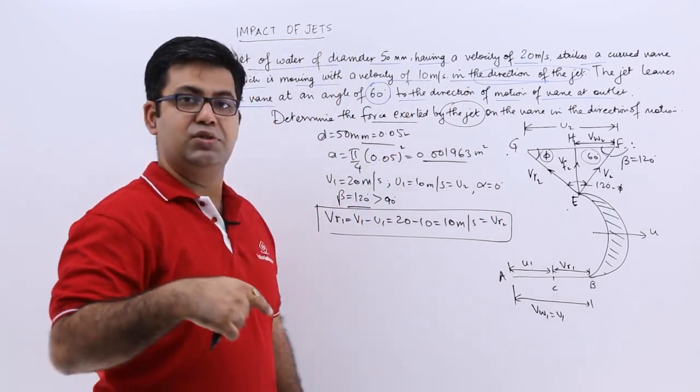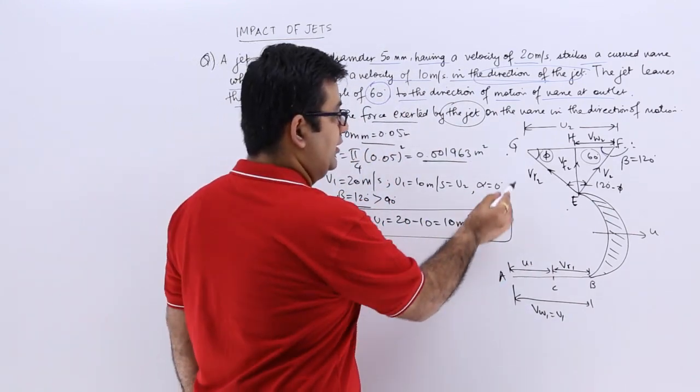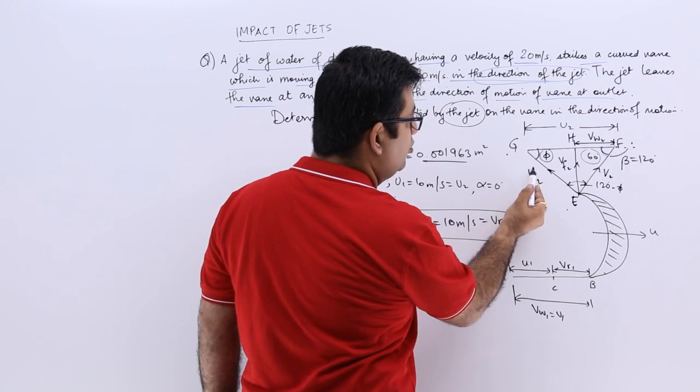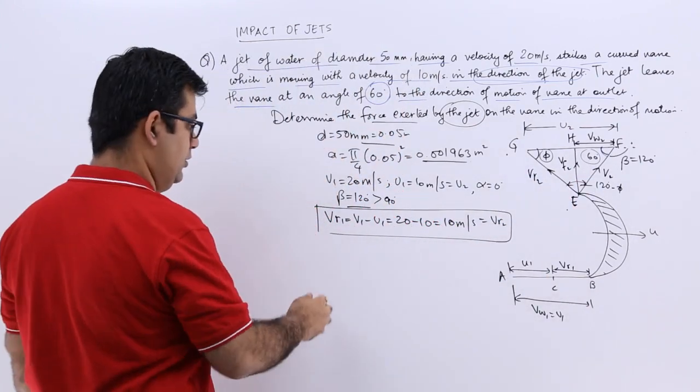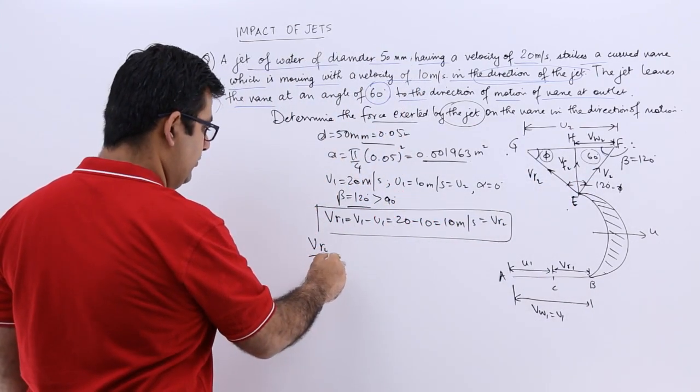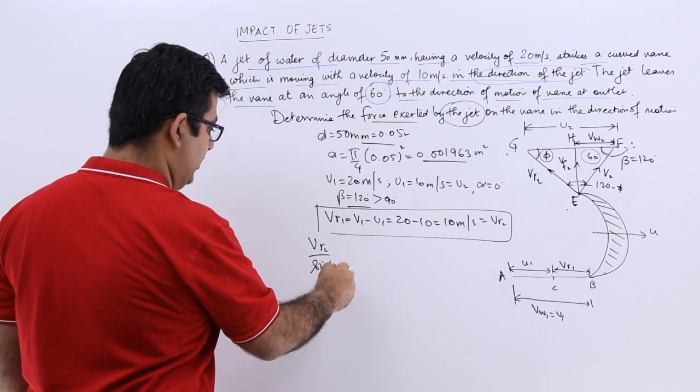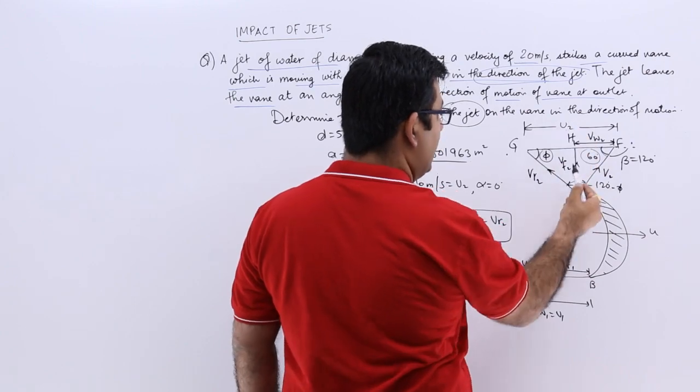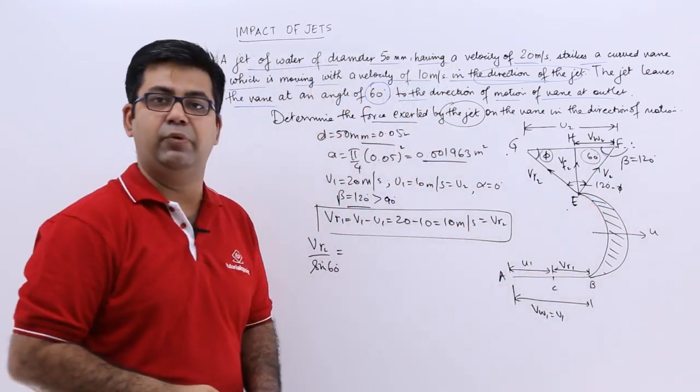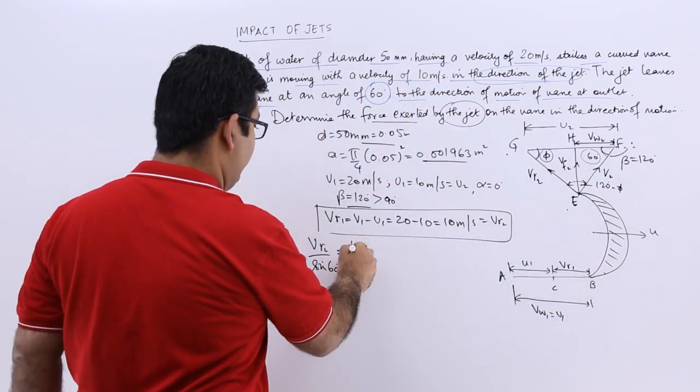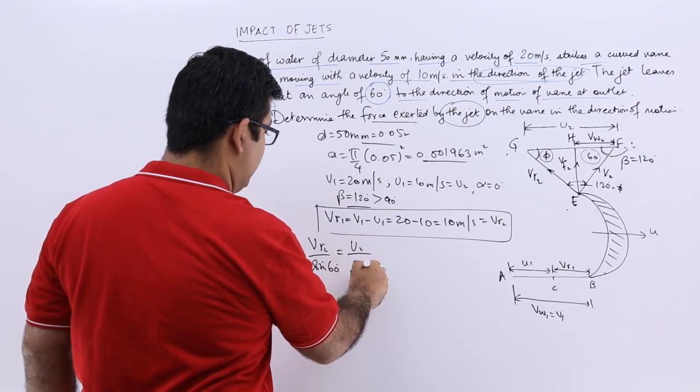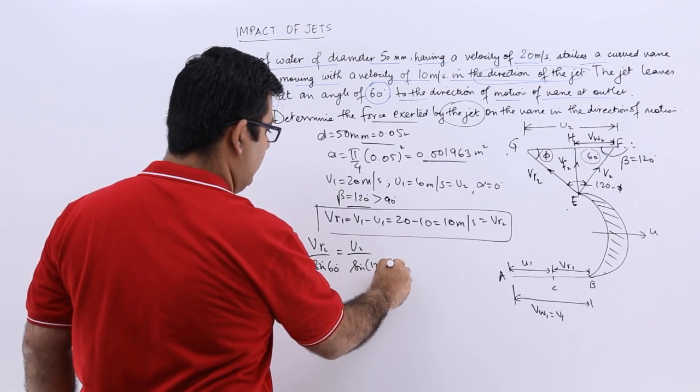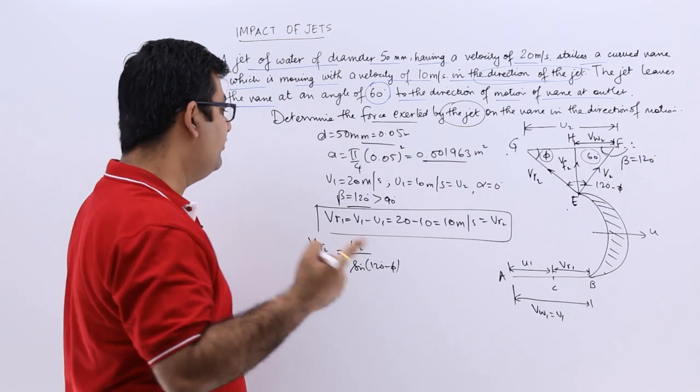So if you use the sine rule, this line, or vr2 upon the sine of 60. So vr2 upon sine 60 is equal to, if I use this side GF, which is u2 upon this sine, which is 120 minus phi. So you will have u2 upon sine of 120 minus phi.